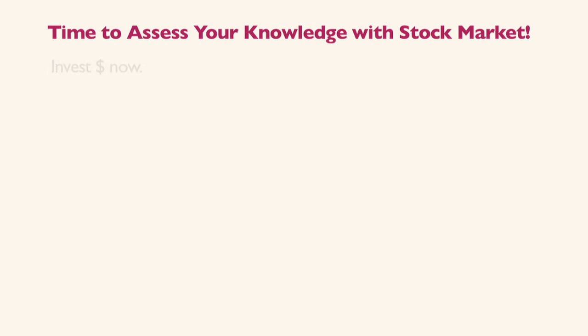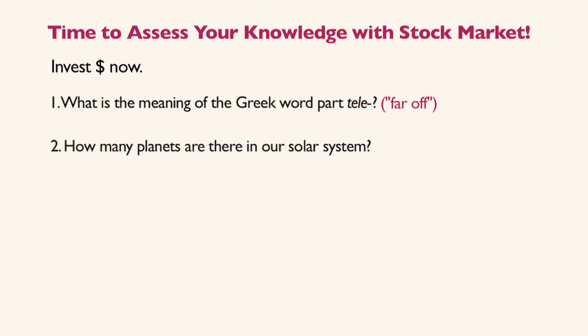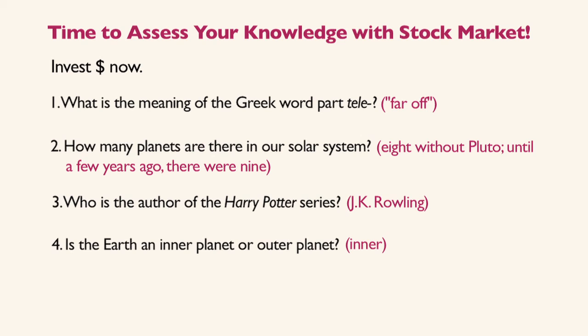Here are some examples of stock market questions. I have the students put their investments down first. Then I ask the first question: what is the meaning of the Greek word part 'tele'? It means at a distance or far off. All groups who answer correctly receive the money they wrote down; if incorrect, you pick up the money they had. How many planets are there in our solar system? There are eight without Pluto — a few years ago there were nine. Who is the author of the Harry Potter series? That's a trivia question — J.K. Rowling.